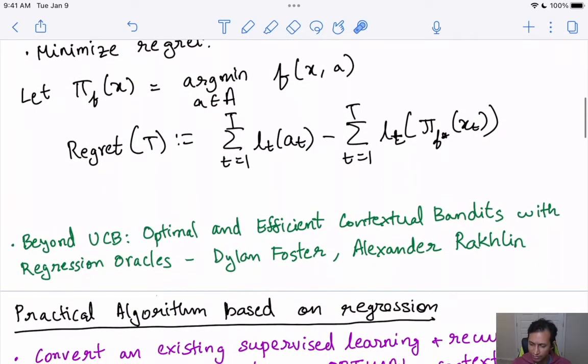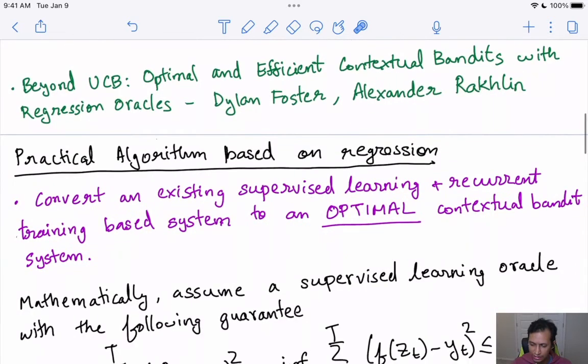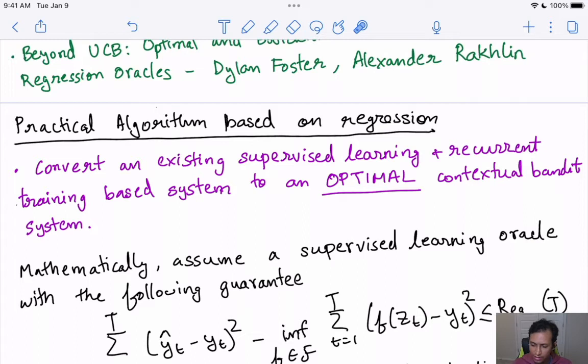Now let's see what this practical algorithm based on regression is. As I said in the beginning, the goal of this particular paper is to say that we can convert any existing supervised learning algorithm plus a recurrent training based system. Essentially, this supervised learning model needs to be trained very often or every so often on newly occurring data. As long as you have these two properties, you will be able to convert that to an optimal contextual bandit system with minimal effort, which is a very good and desirable property. Most contextual bandit algorithms in the past differ significantly from pipelines that we typically use for supervised learning, which makes productionizing of contextual bandit systems very hard. This particular algorithm takes a step forward in rectifying it and tries to reuse most of the pipelines and the qualities of a supervised learning system, just adding a different sampling structure.